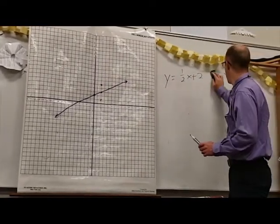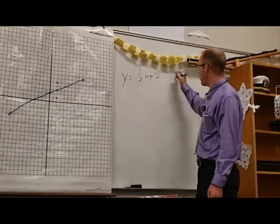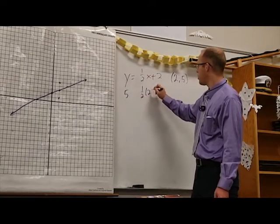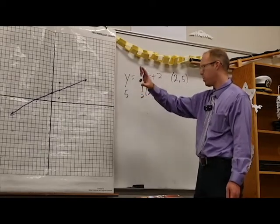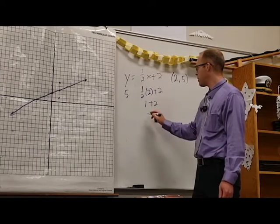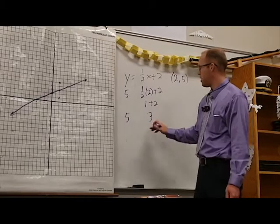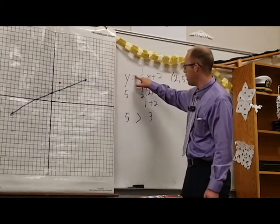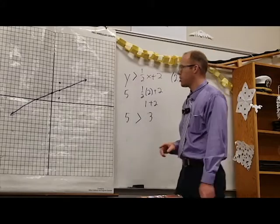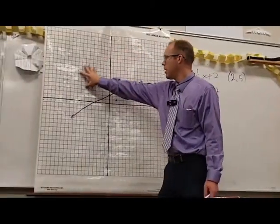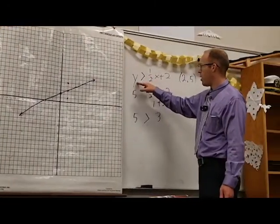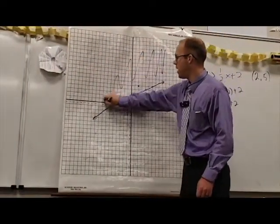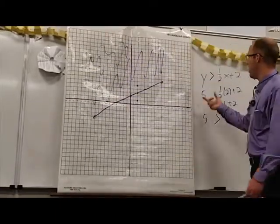I'm going to leave out the equal sign and test out the point two, five. We have five on the left, and one-half times two plus two on the right. One-half times two is one, so we get one plus two which is three. We have five and three, and the symbol that goes here is greater than. So the point above the line is a solution when we have a greater than symbol, and that's true for every single point above the line. When we see greater than, we're going to shade the area above the line.